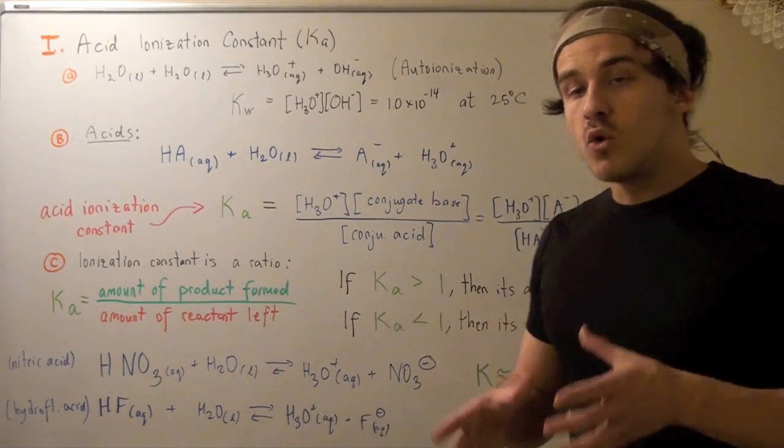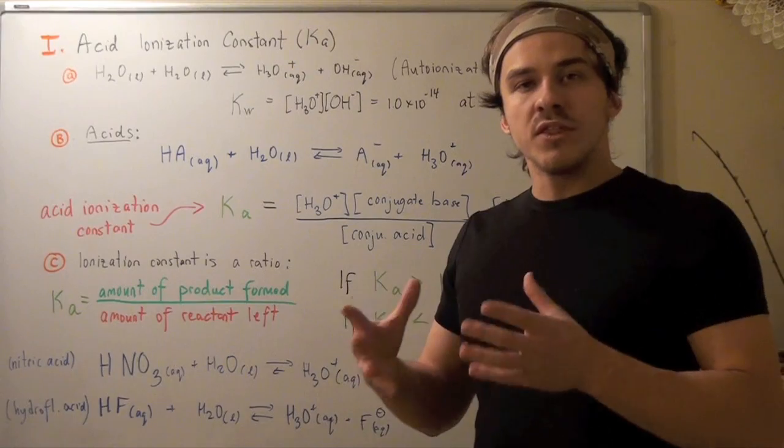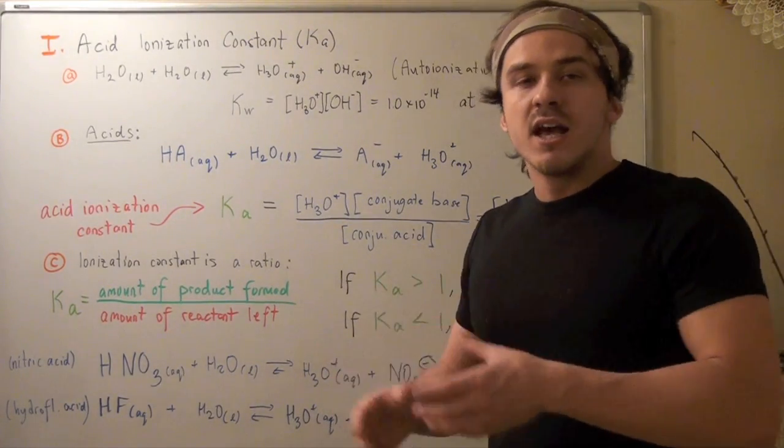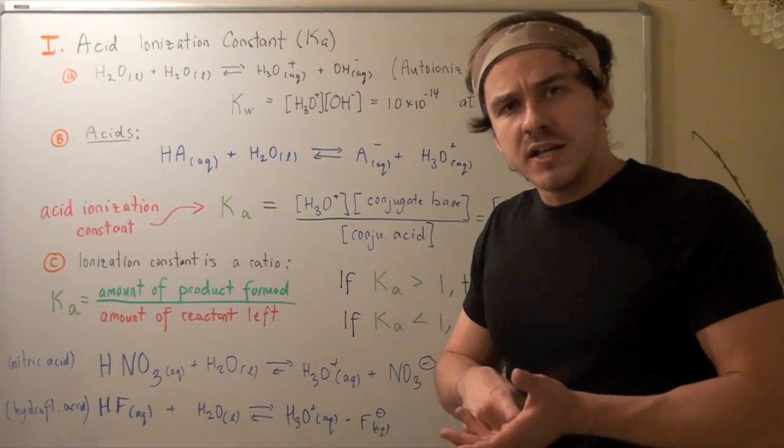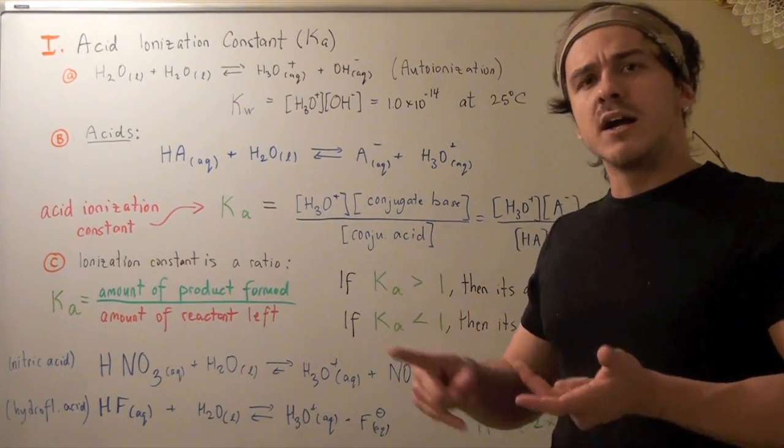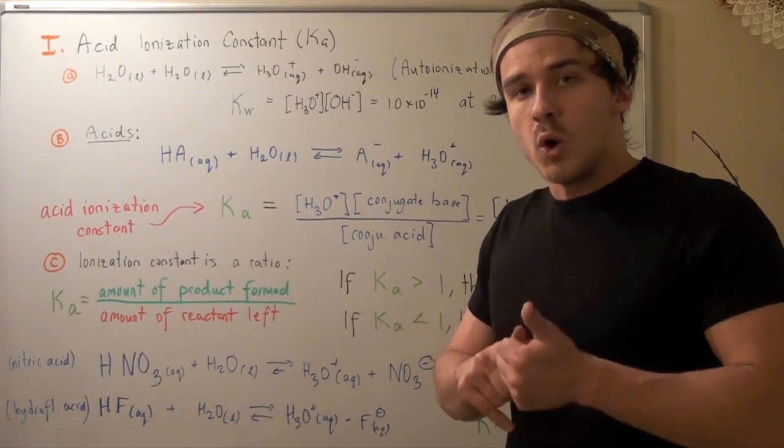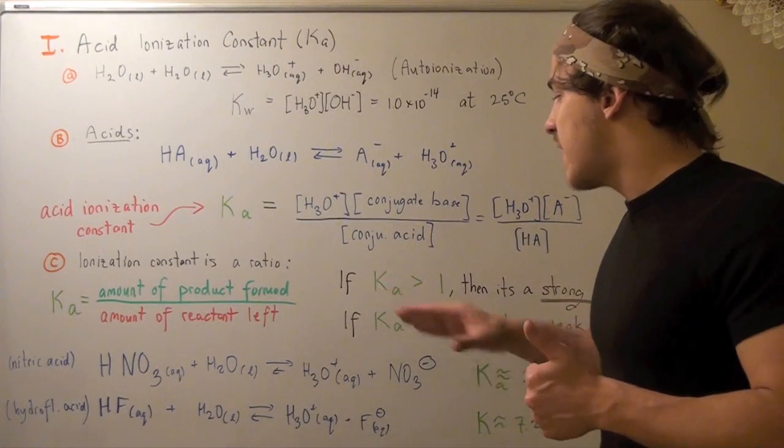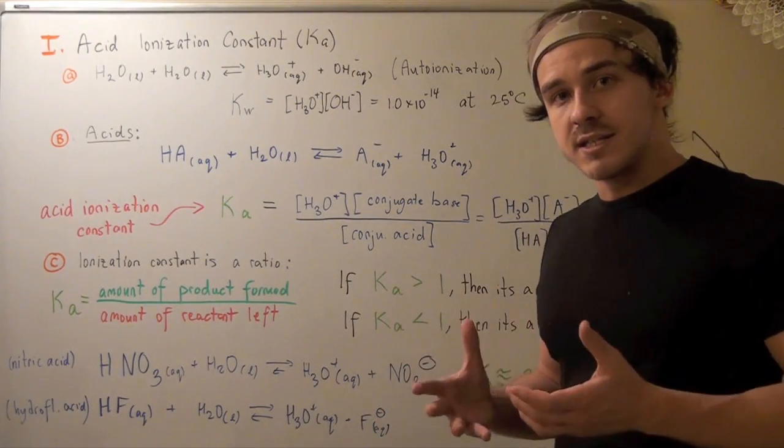Now we can use this Ka value to determine whether an acid is good or bad. Before, we had to look at bond polarity, bond strength, and the conjugate base. These are still important, but now we have a fourth component: we can use the Ka value to determine if an acid is strong or weak.